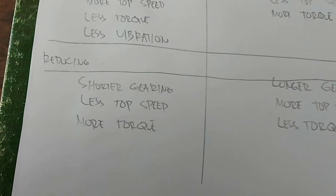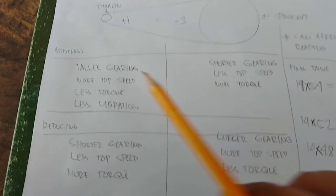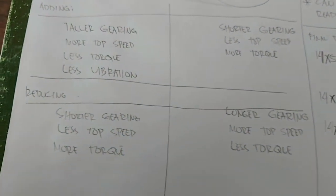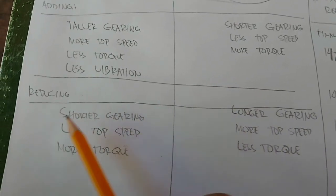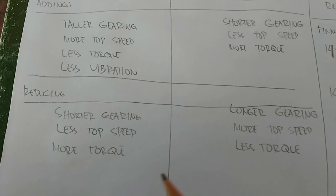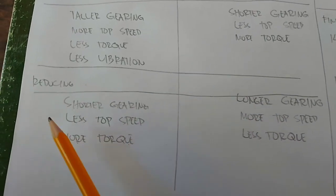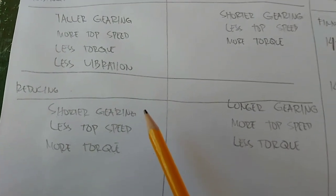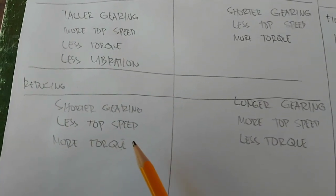So what happens if you reduce teeth on your pinion? Of course, opposite of taller gearing, you reduce the final drive ratio which means you have shorter gearing. So in translation to motion, you get less top speed but you get more torque. So even though your top speed is lower, you have stronger pull.